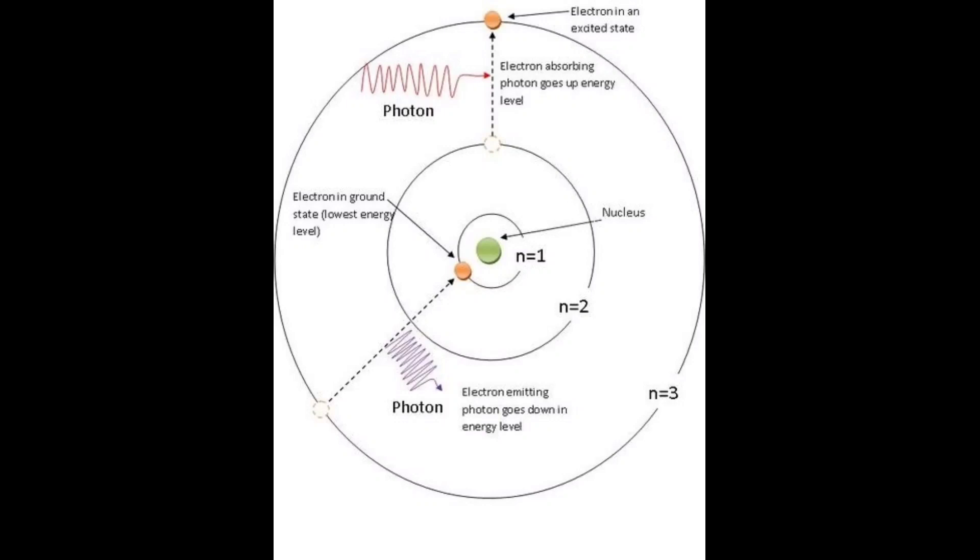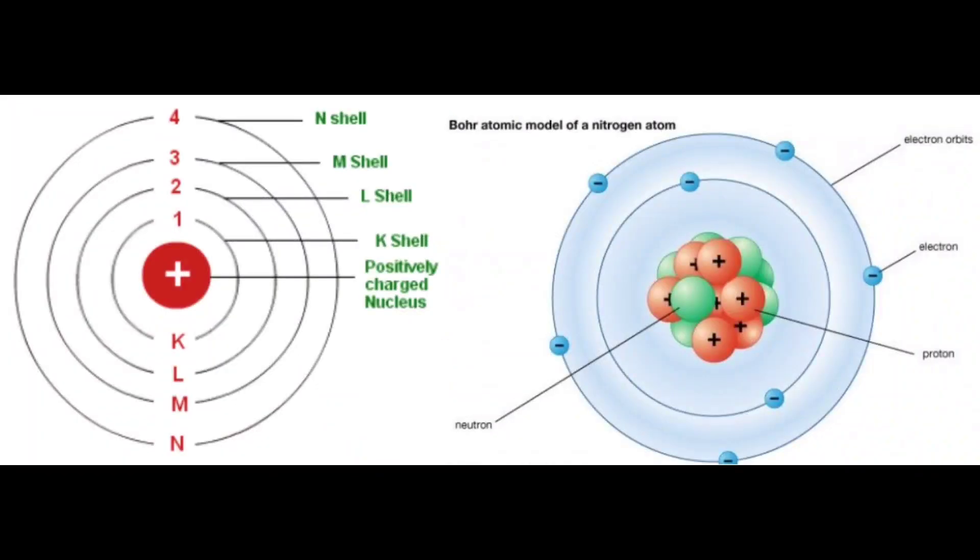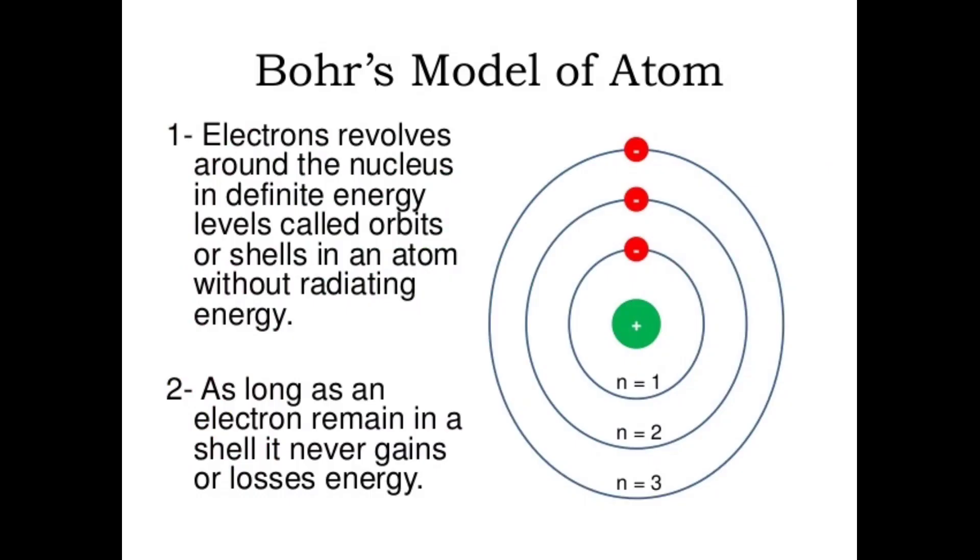Now I will discuss the postulates of Bohr's model of an atom. Number one: In an atom, electrons, negatively charged, revolve around the positively charged nucleus in a definite circular path called orbits or shells. Number two: Each orbit or shell has a fixed energy, and these circular orbits are known as orbital shells.